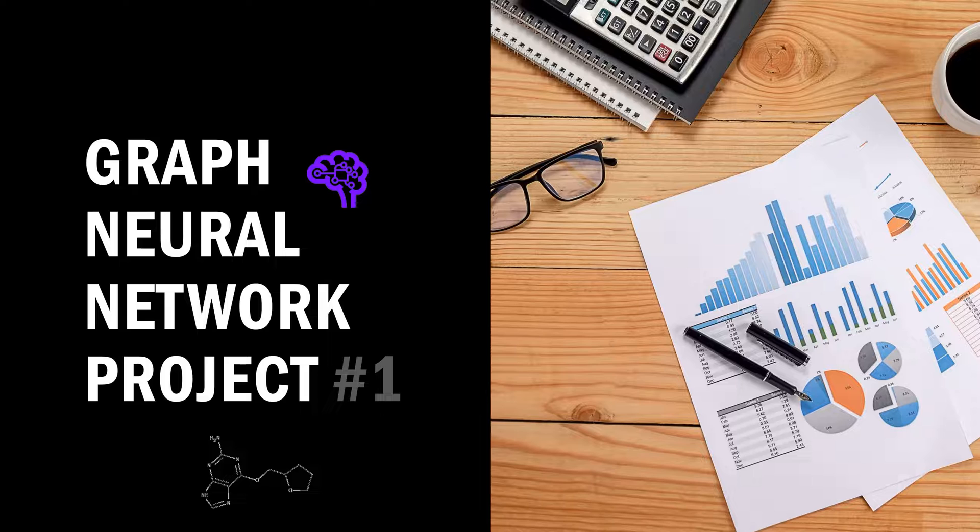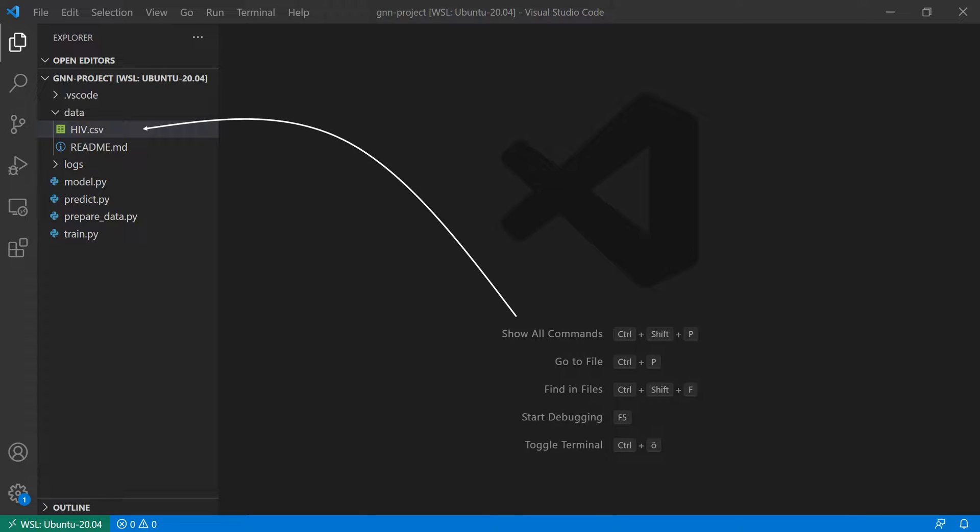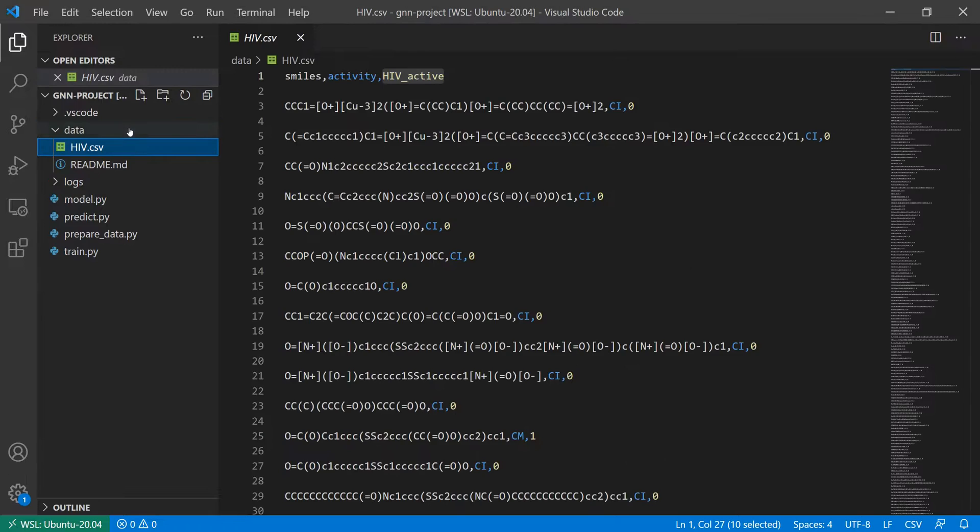I found a suitable dataset from MoleculeNet which I will use for this project. This dataset contains roughly 80,000 molecules as a SMILES string which are labeled according to their ability to inhibit HIV replication.